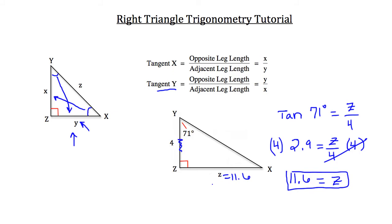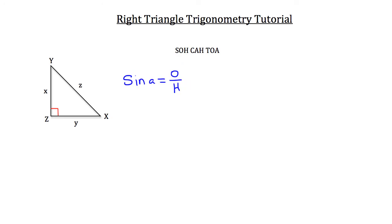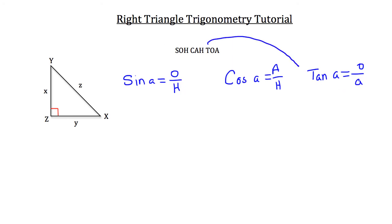Now I'm going to teach you a good way to remember this — you may have heard of it before. It's called SOHCAHTOA. SOHCAHTOA is an acronym to remember right triangle trigonometry. The sine of an angle equals the opposite over the hypotenuse — S for sine, O for opposite, H for hypotenuse. Cosine of an angle equals adjacent over hypotenuse — C for cosine, A for adjacent, H for hypotenuse. Tangent of an angle equals the opposite leg over the adjacent leg — T for tangent, O for opposite, A for adjacent.